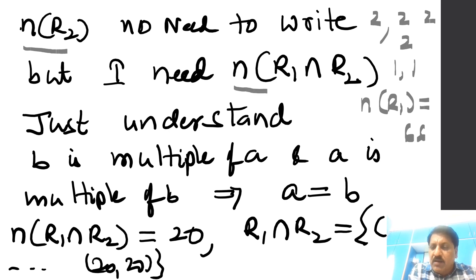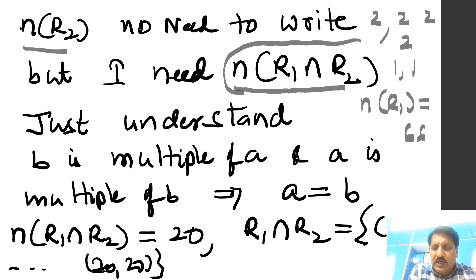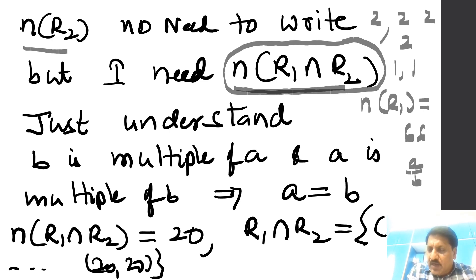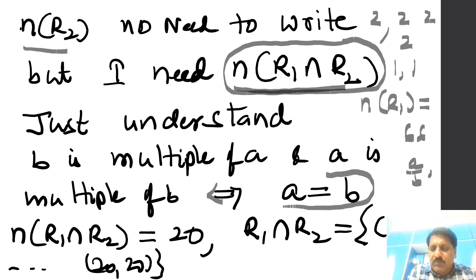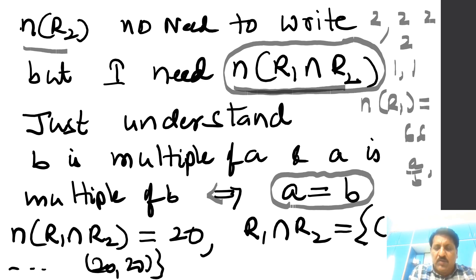I need the common elements — that is, n(R1 ∩ R2). To find R1 ∩ R2, I apply divisibility rules: if a is divisible by b and b is divisible by a simultaneously, the only possibility is a = b. So all elements in R1 ∩ R2 are pairs where a = b, namely (1,1), (2,2), ..., (20,20). Therefore n(R1 ∩ R2) = 20.